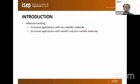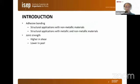Adhesive bonding allows the assembly of dissimilar materials. With the development of non-metallic materials, this has become more employed in manufacturing. It is well known that adhesive joints are stronger when loaded in shear than when loaded in peel; hence, shear is the preferred loading mode.